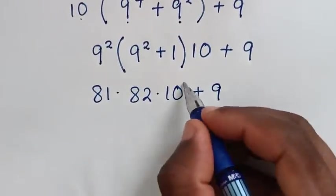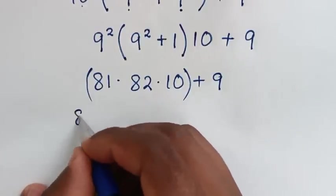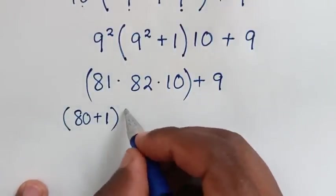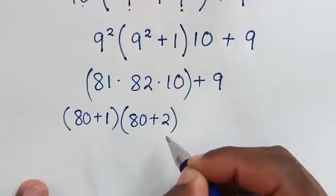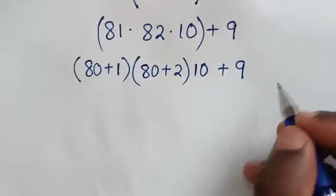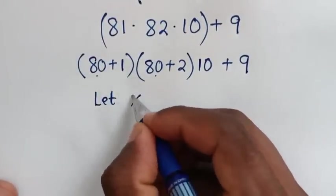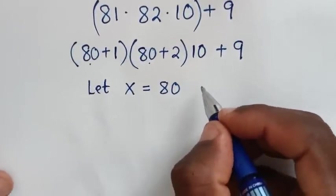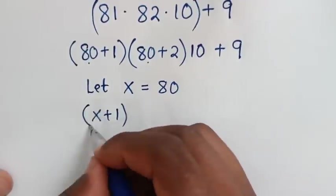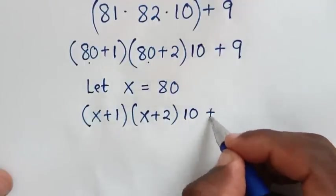Now in the next step we'll deal with this multiplication. We have 82 times 10, then plus this 10, then plus this 9. Into here, 82 is common, so let's say x is equal to 82. So this expression here will be x plus 1, then times x plus 2, then times 10 plus 9.